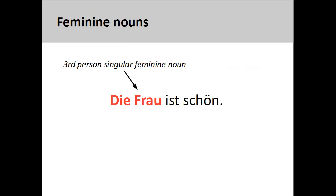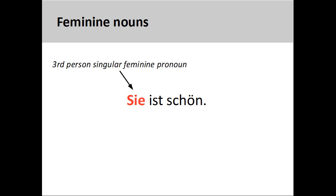For instance, in the sentence you see on the screen — die Frau ist schön, the woman is beautiful — the feminine noun Frau can be replaced by the third person singular feminine personal pronoun sie, she. This makes sense as the substitution is based on biological gender.